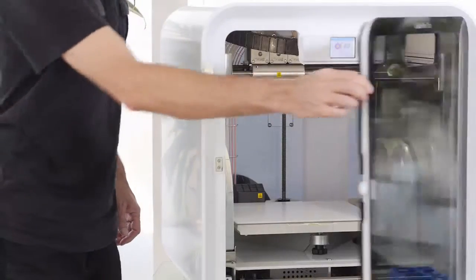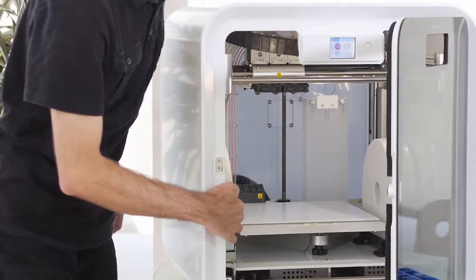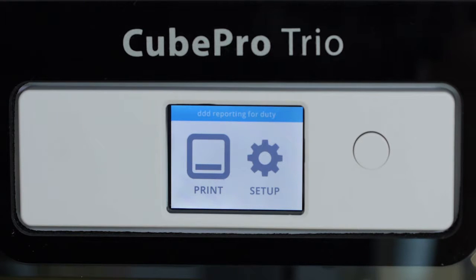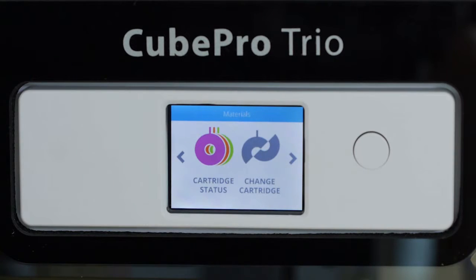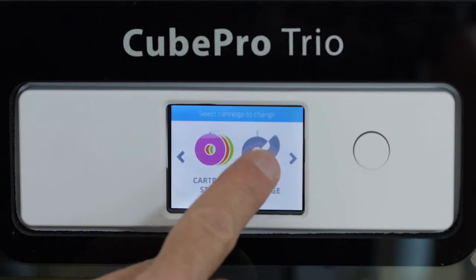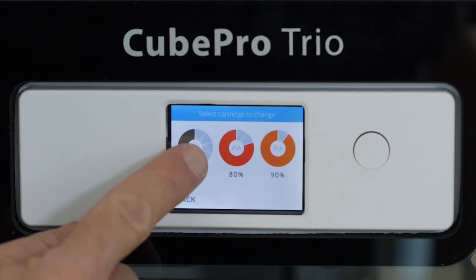We'll get started by replacing a cartridge to Bay 1. To install a cartridge, simply go to your Setup menu and press Replace on the touch screen and select which cartridge you want to replace.